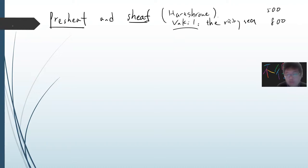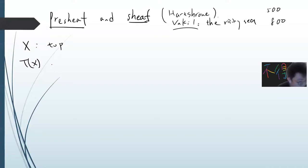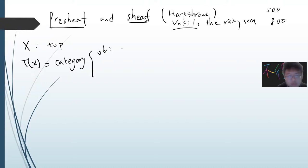Pre-sheaf and sheaf are 101 topics. Note that a variety is a special type of sheaf, so I will try to introduce this. The starting point is a topological space X, and we define T(X) to be a category. The objects of T(X) are basically the open sets in X.